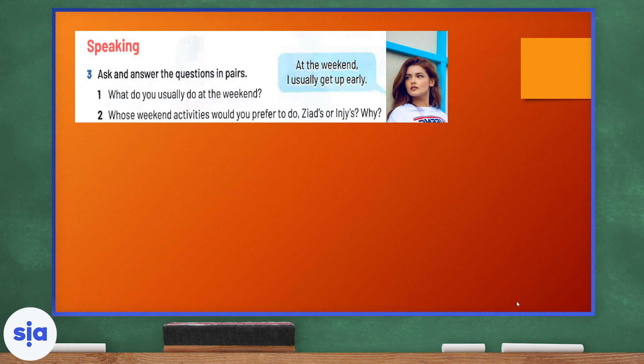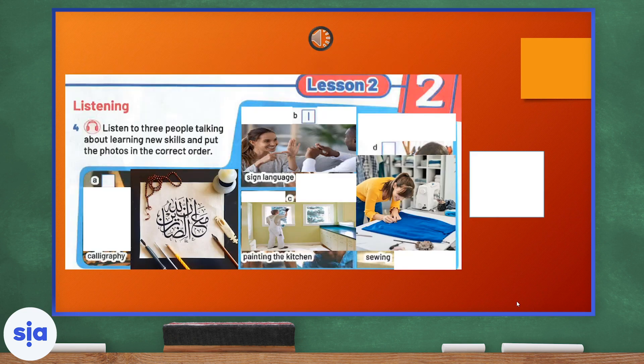Let's move on to the speaking section. What do you usually do on the weekend? Ask and answer these questions to your partner. Whose weekend activities would you prefer to do, Zied or Inji's and why? Here, let's read the speech bubbles. At the weekend, I usually get up early. So, I would usually enjoy going to the beach and I would prefer Inji's activities more than Zied because Inji's activities are quite fun and active. What about you? Answer questions one and two with a partner.